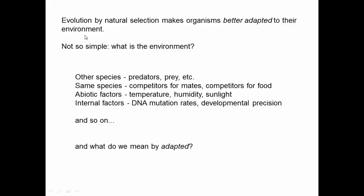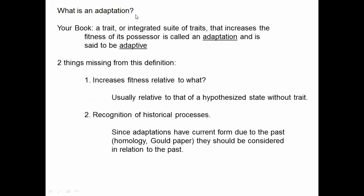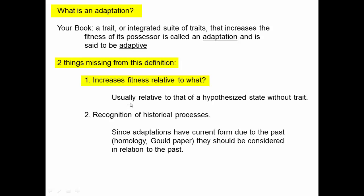Going back to the statement that evolution makes organisms better adapted — what do we mean by 'adapted'? So what is an adaptation? In your book, an adaptation is defined as a trait or integrated suite of traits that increases the fitness of its possessor. It's called an adaptation and said to be adaptive. There are two things missing from this definition. First, when it says 'increases fitness,' we want to think about increases fitness relative to what? Usually we think of it as relative to a hypothesized state without that trait — comparing an organism that has the adaptive trait to an otherwise identical organism that doesn't have it.